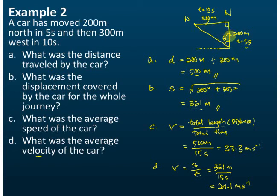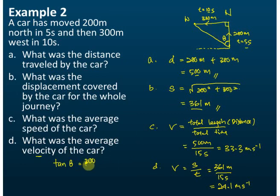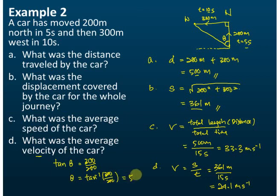We can find the direction by using tangent, if you remember your trigonometry. Tangent theta equals the opposite side divided by the adjacent side, which is 300 over 200. By using your calculator, theta equals inverse tangent of 300 over 200, and you should get the answer 56.3 degrees.